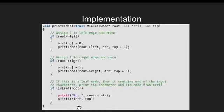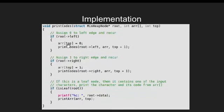This function will help us to generate codes using a Huffman tree. We input a pointer to root node, an auxiliary array to store the code formed so far, and the size of it. We assign 0 if a left edge exists and recurse. Similarly, if a right edge exists, we assign 1 and recurse. If we reach a leaf node, we print the code value stored in our array.